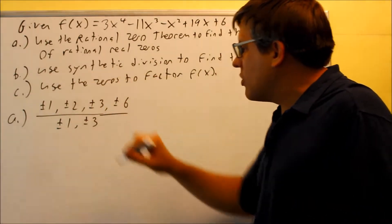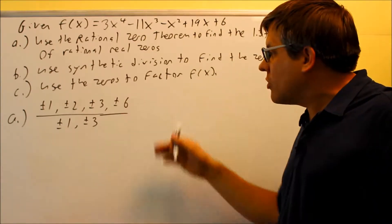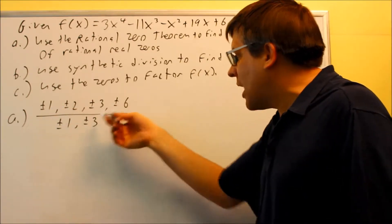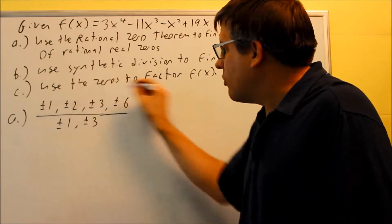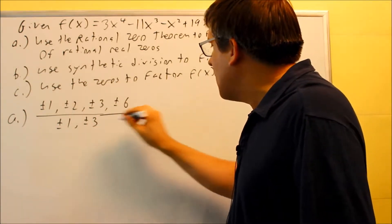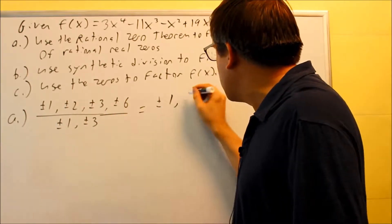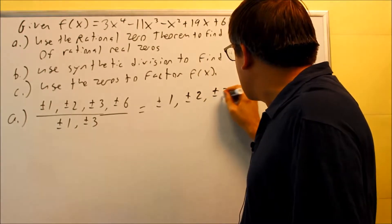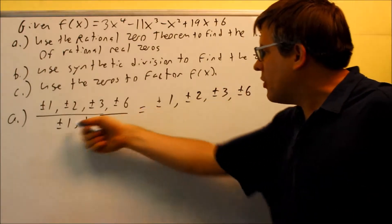Don't leave your answer as this. You want to continue and actually create a list of all these. You're going to take all the numbers on top, divide by 1, then divide by 3, and that's going to give you your completed list. All the numbers on top divided by 1 just gives you the same numbers: plus or minus 1, plus or minus 2, plus or minus 3, and plus or minus 6.